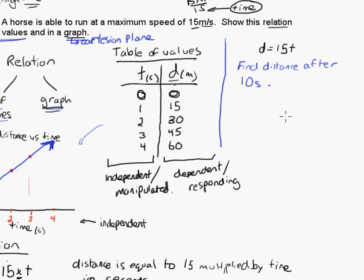If we were to find the distance after 10 seconds, we want to use this equation, because it wouldn't be very practical to use the table of values. Then you'd have to go all the way up to 10 seconds. Using the table of values isn't very good for this type of example.